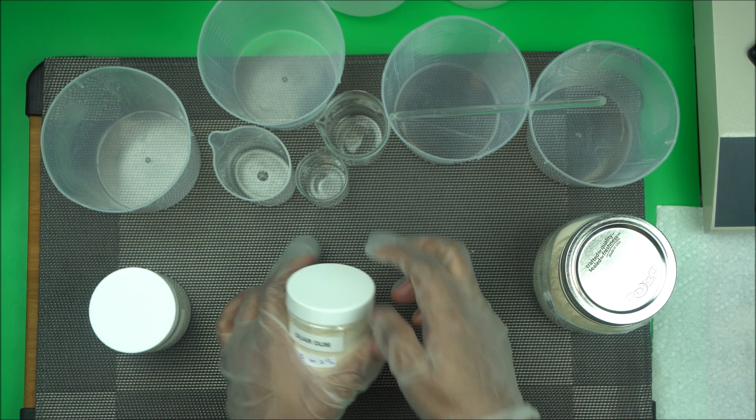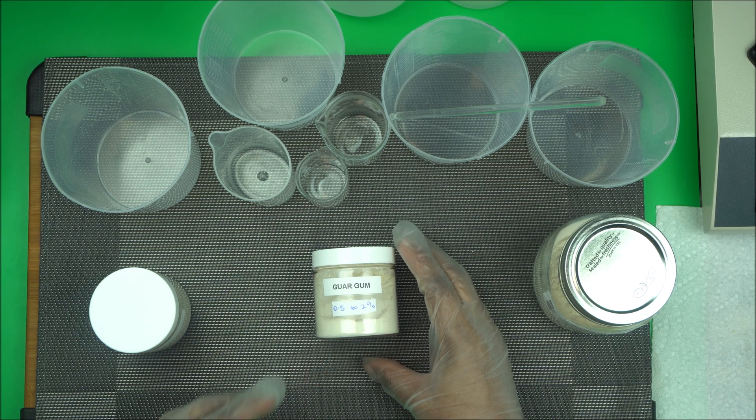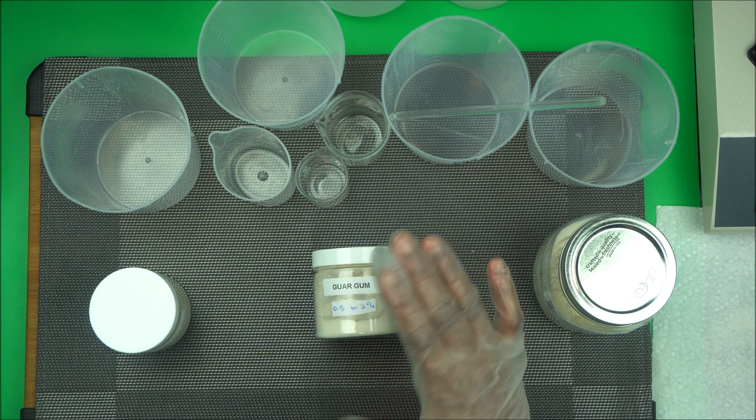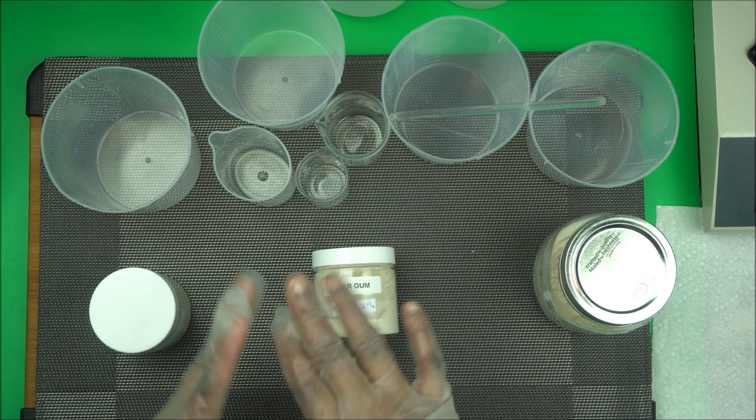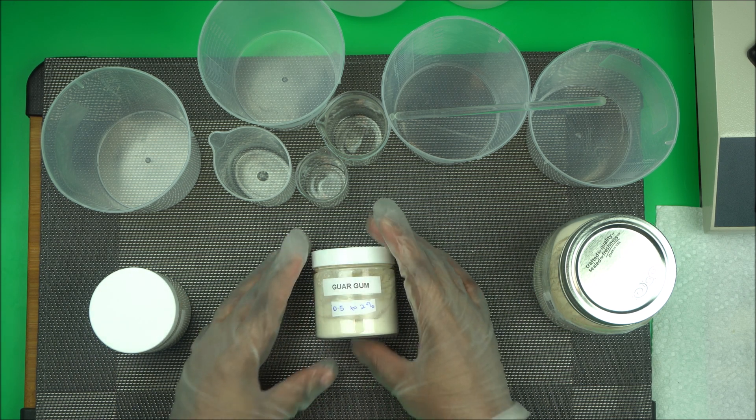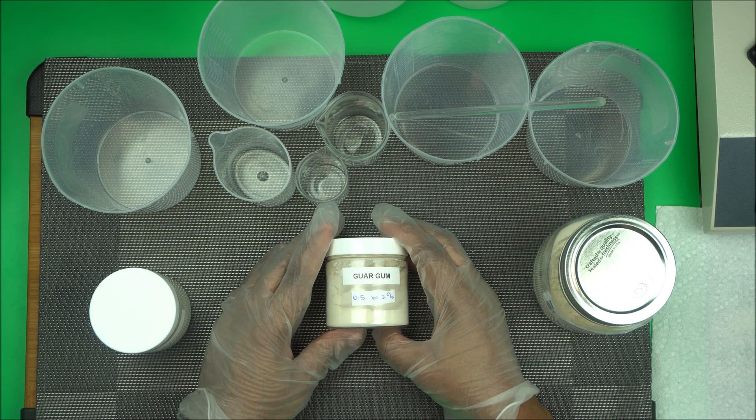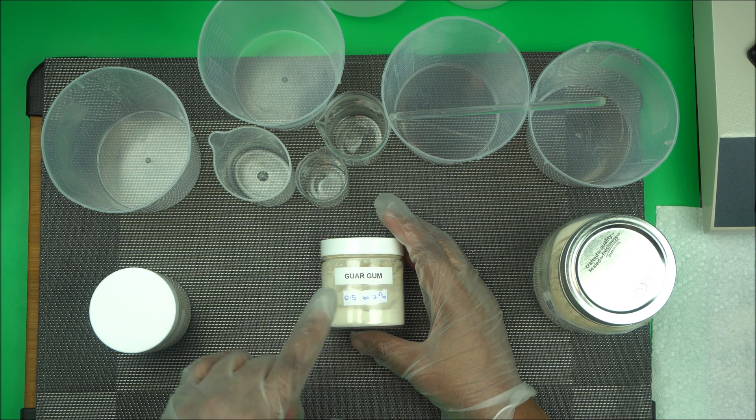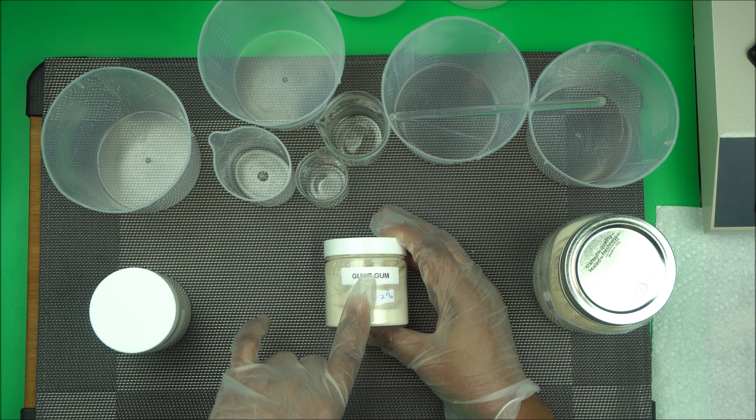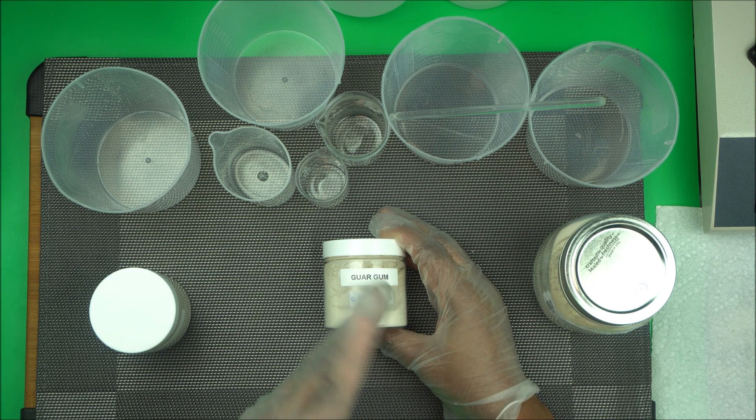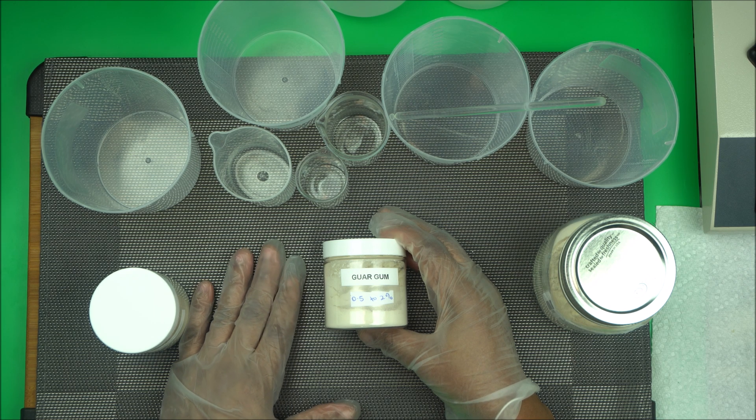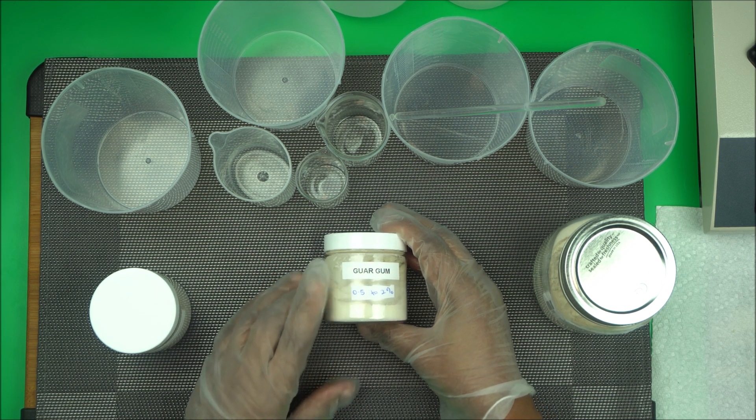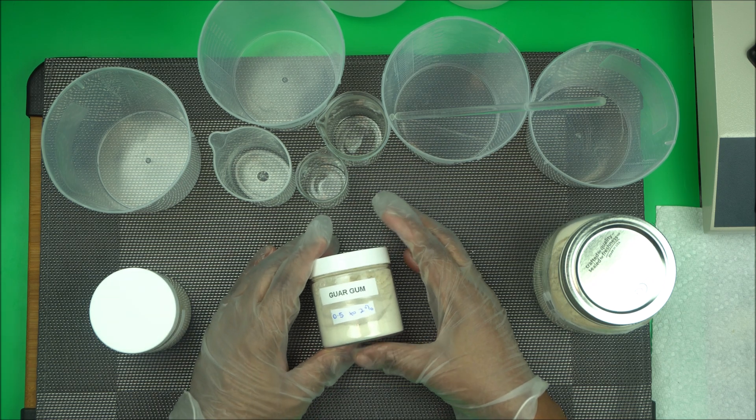In guar gum, we use guar gum also to make shampoo. That's the ability, because of the surfactant quality, it helps to increase lather. So that's why we use it to make cleaning products like soap. And we can also use it to make shaving products. It helps to decrease the friction for easy use.